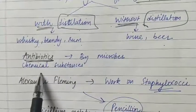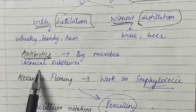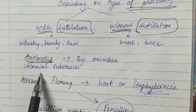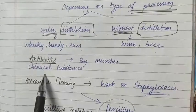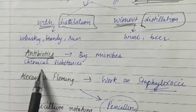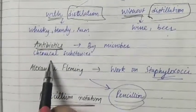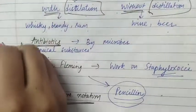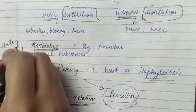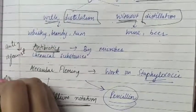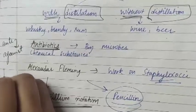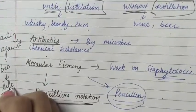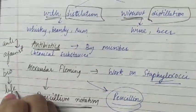Now we will talk about antibiotics. Antibiotics produced by microbes were a most significant discovery of the 20th century and have greatly contributed to human welfare. The word antibiotic means 'against life' — anti means against and bio means life.